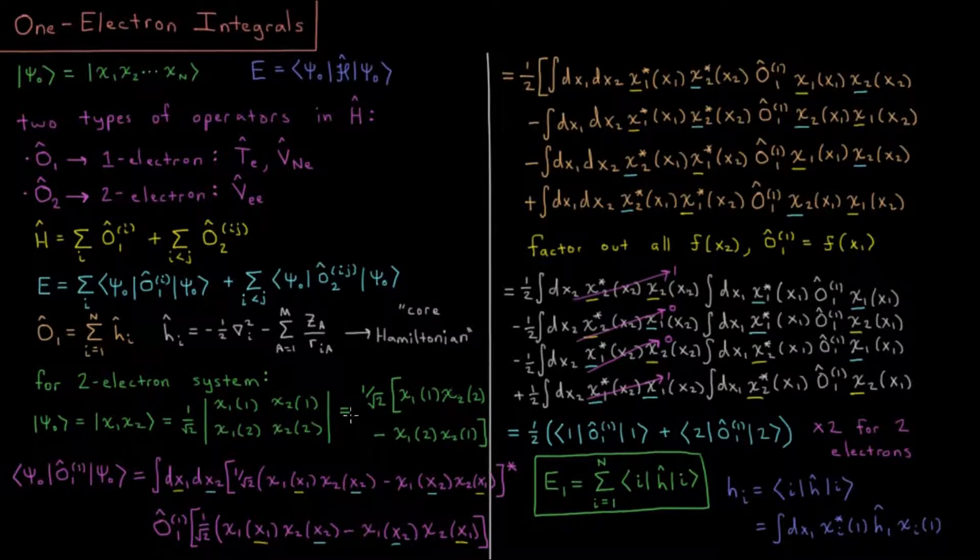What we need to do is take O₁ for electron 1, and we're going to act that on our determinant, and then we're going to multiply by the complex conjugate of that determinant and integrate over all space.